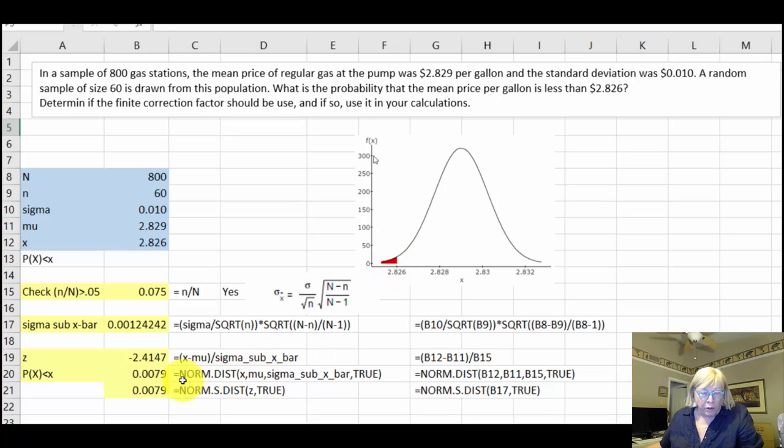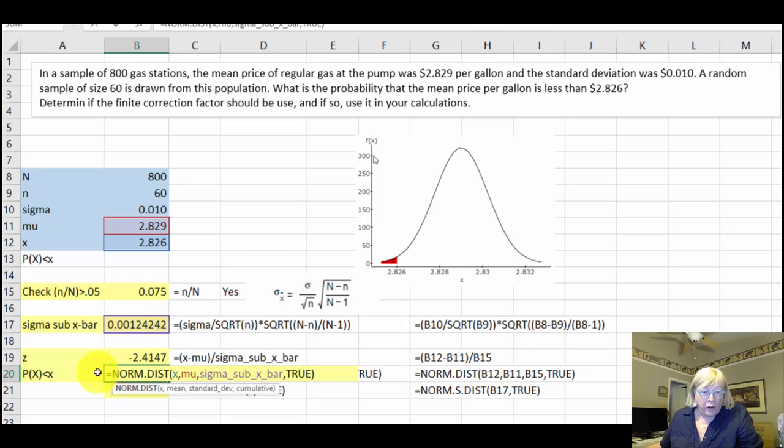Then we calculate the probability. We're looking for this from left infinity to the value of x. To do that, we use the NORM.DIST function in Excel. Just start typing equal NORM and it'll start offering up the various types of normal distribution functions. We want NORM.DIST. It takes as its parameters our value of x, mu (the mean), our adjusted sigma sub x-bar, and we use a value of true to give us the cumulative mass function, which is the total probability from left infinity to our x value.